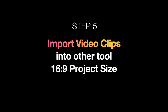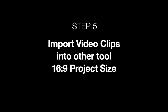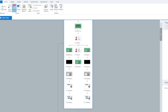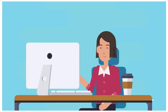Finally, I import the video clips into another tool like Articulate Storyline 360 — which also has a project size of 16 by 9. I use Storyline to add interactive elements like decision screens, buttons, and branching logic. I can also add variables, scoring, timers, and other gamification elements.